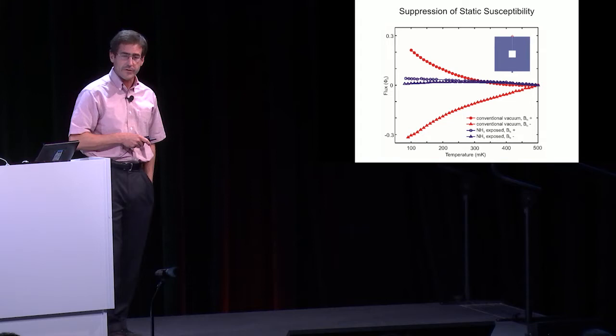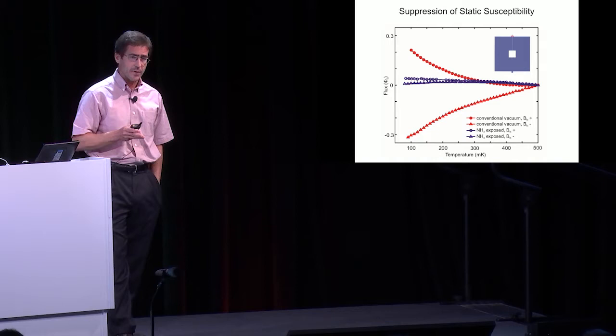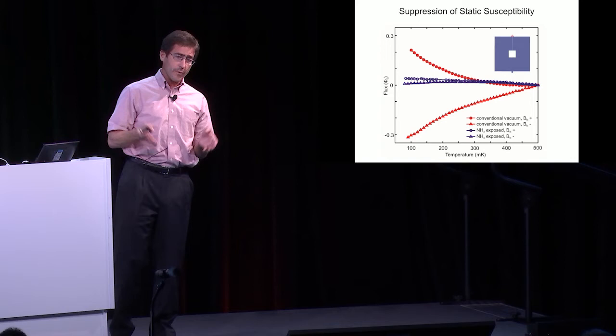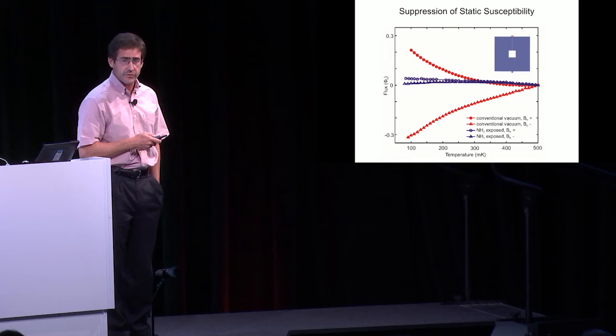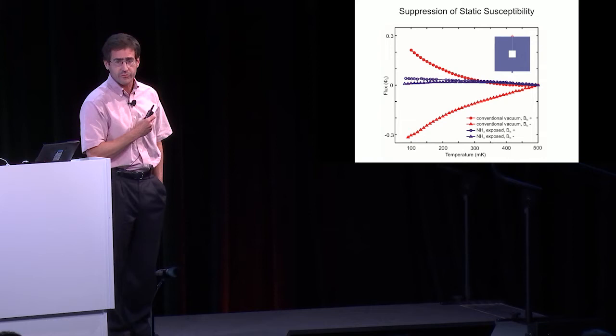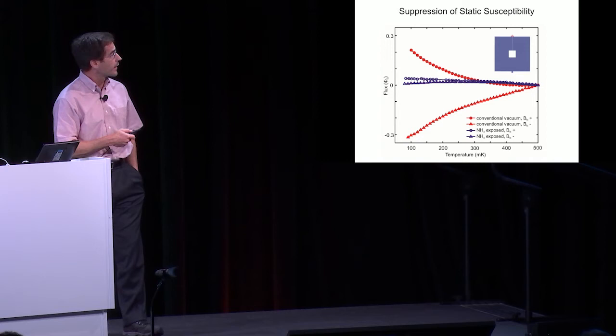Looking at the Curie response for devices cooled with positive and negative field, the difference at lowest temperature is directly proportional to surface spin density. With passivated devices, we suppressed the susceptibility by about an order of magnitude. In any magnetic system, susceptibility is proportional to the noise power spectral density integrated over all frequencies. This is an indirect measurement showing we've reduced the integrated noise by an order of magnitude.